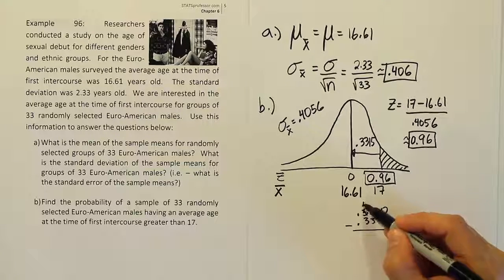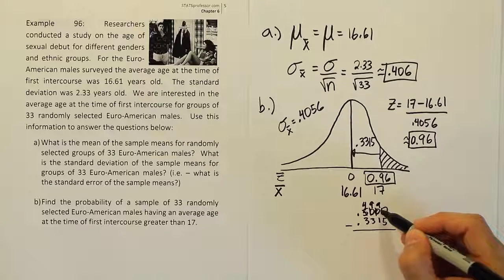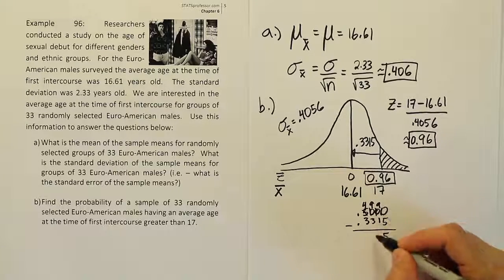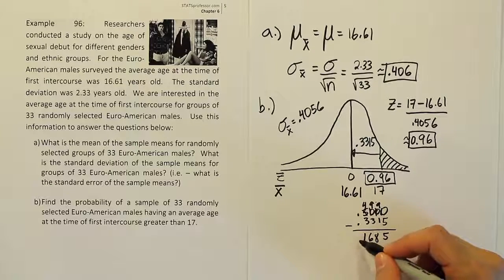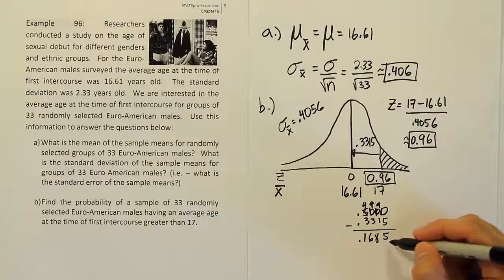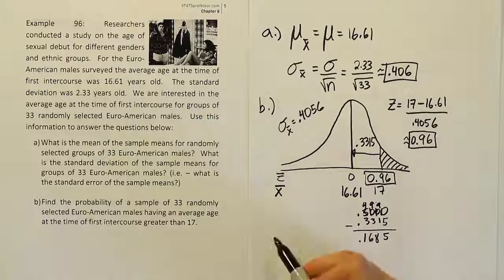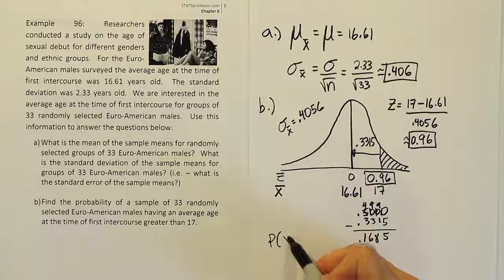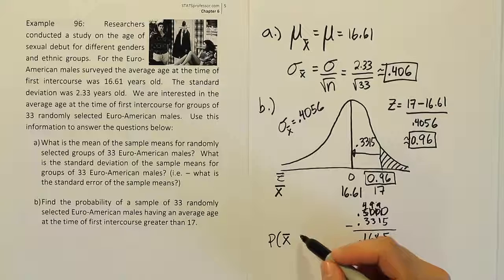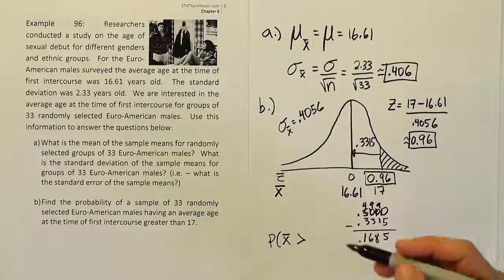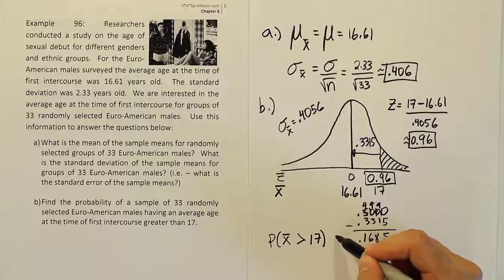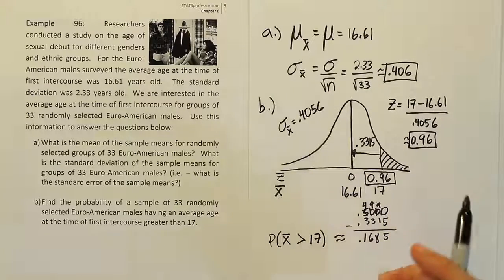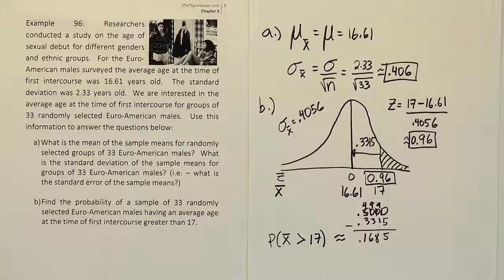So we'll use a little old-school borrowing. So 10 take away 5 is 5, 9 take away 1 is 8, 9 take away 3 is 6, and 4 take away 3 is 1. So we get the answer 0.1685, and this is ultimately the probability that an X̄ value from this group of 33 Euro-American males will be greater than the value of 17, and so that is approximately equal to 0.1685, or about 17% chance. So that's your answer.